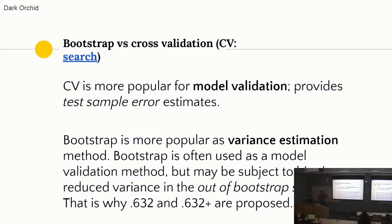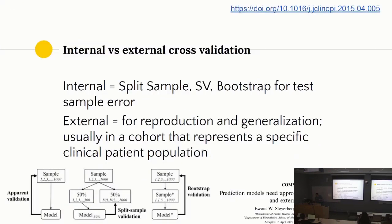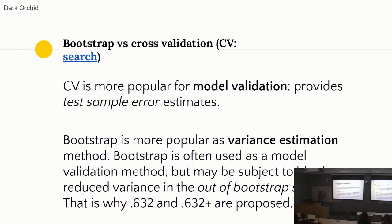Later we figured out that bootstrap has something very similar to cross-validation, where we are splitting our sample into a test sample and a training sample. In bootstrap as well, some samples are selected in a particular bootstrap sample and some are not — we call those out-of-bag or out-of-bootstrap samples. We can then use those out-of-bootstrap samples similarly to cross-validation to estimate test sample errors.